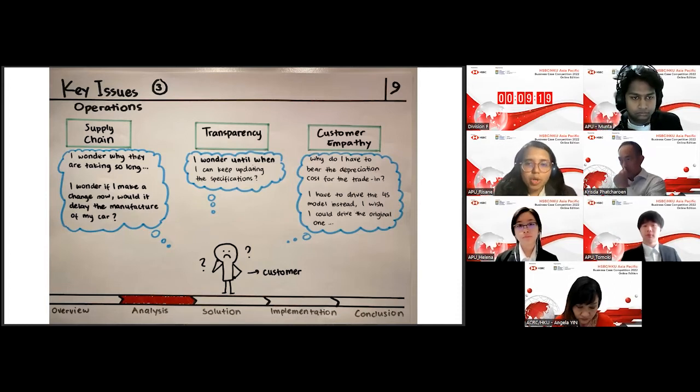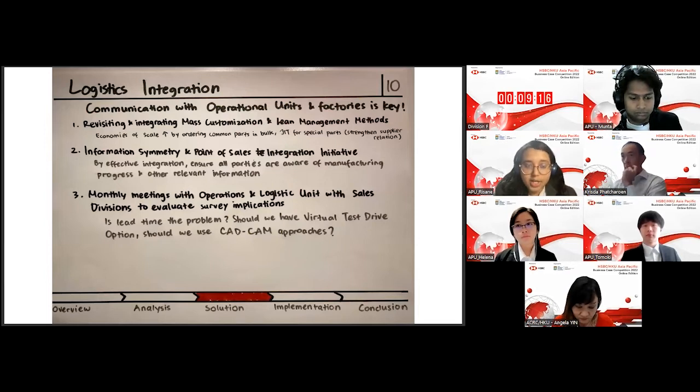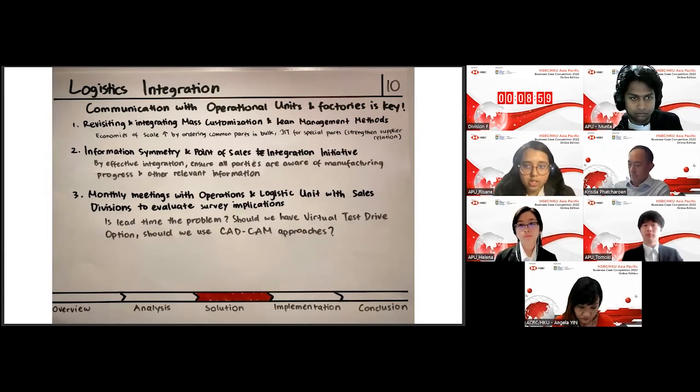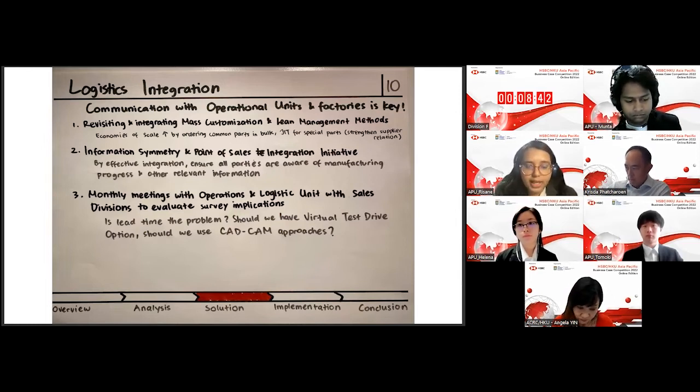In the next slide, we will be seeing how we solve these issues by integrating logistics. Please take note that here we would have to communicate with the operational units located abroad. The first step would be to revisit and integrate the mass customization and lead management methods. This would be to increase efficiency and to minimize cost. How can they do so? They can try to incorporate economies of scale when they order the common parts. They should try to order the common parts such as maybe the Porsche has the same tire or the same seat for all the Porsche models.